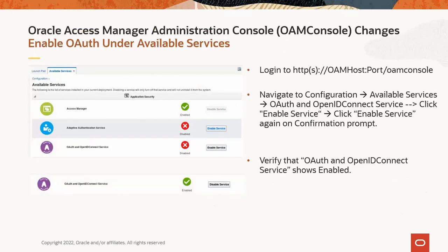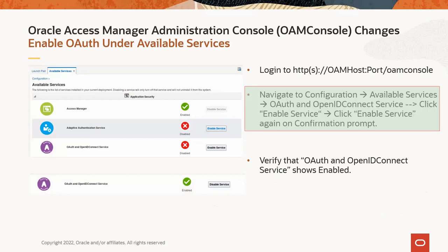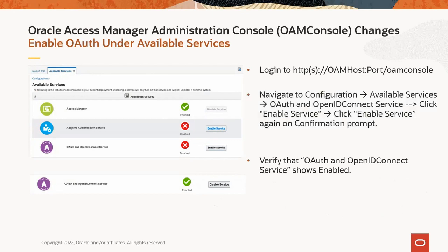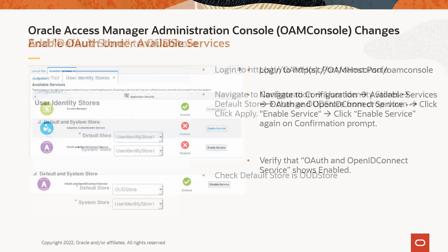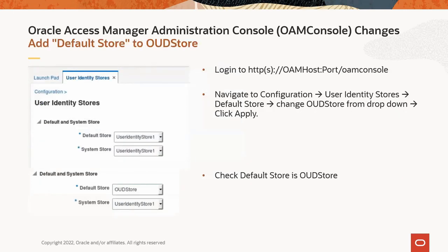To enable the OAuth service, log in to the OAM console and navigate to Configuration and then Available Services. Click the enable service option next to OAuth and OpenID Connect service, then click Enable Service again on the confirmation prompt. This next step changes the default store to the OUD store — adding the OUD store is listed as a prerequisite. Log in to the OAM console, navigate to the path described in the slide, change the default store to the OUD store, and click Apply.